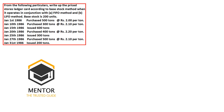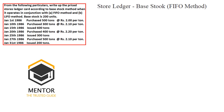In this question, you are required to prepare a stores ledger under FIFO and LIFO methods by keeping 200 units as base stock. We have: purchase of 500 units at 2 per unit, then purchase of 300 units, then issue of 600, then purchase of 400, issue of 300, then purchase of 500, and finally issue of 200 units. We will prepare the stores ledger under Base Stock Method under FIFO.